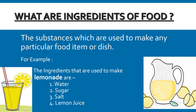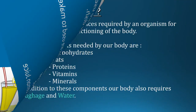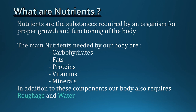Here is a term ingredient, which is related to food. The substances which are used to make any particular food item or dish are termed as ingredients. For example, the ingredients used to make lemonade are water, sugar, salt, and lemon juice. One more term related to food is nutrient. Nutrients are the substances required by an organism for proper growth and functioning of the body. The main nutrients needed by the human body are carbohydrates, fats, proteins, vitamins, and minerals.